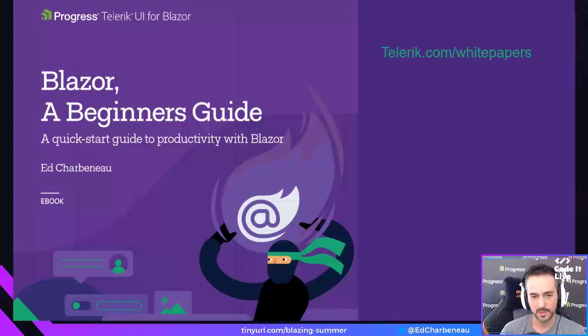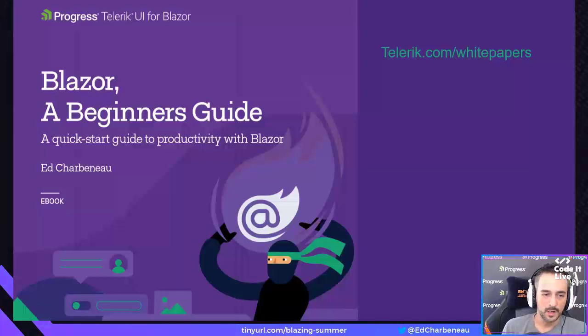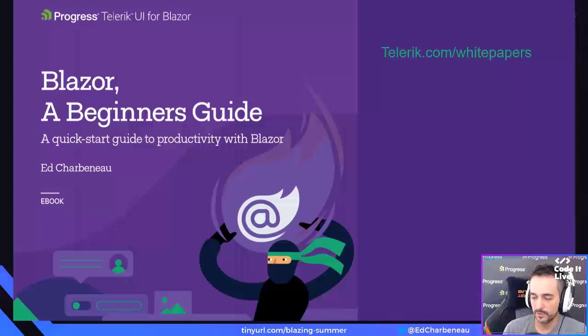I'd like to mention a free ebook I wrote — you can get it at telerik.com/whitepapers. It's the first item on the list when you go through that link. Sign up and you'll get the ebook for absolutely free. It includes chapters on how to create components, which we'll be walking through here on the show in just a minute.